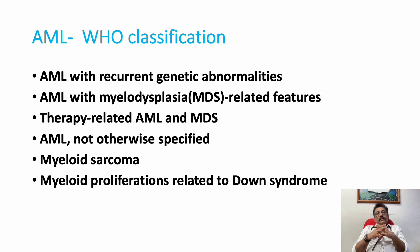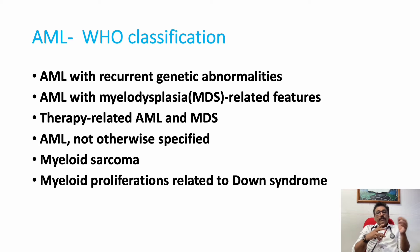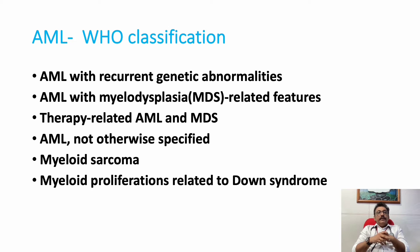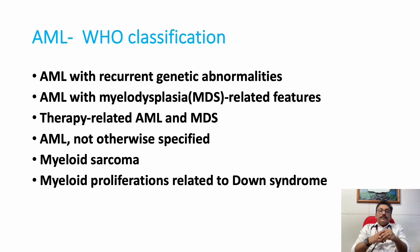WHO has classified AML into various types: AML with recurrent genetic abnormalities, AML with myelodysplastic syndrome and related features, treatment-related AML and myelodysplastic syndrome, AML not otherwise specified, myeloid sarcoma, and myeloid proliferation related to Down syndrome. These are the classifications given by the World Health Organization.